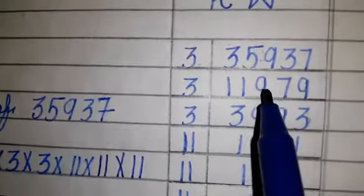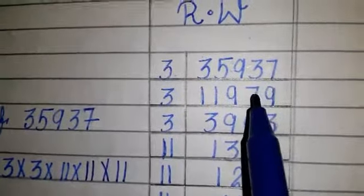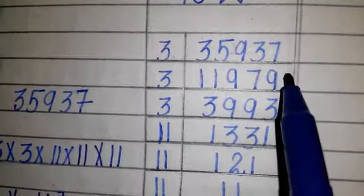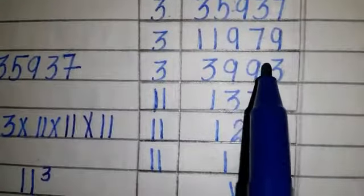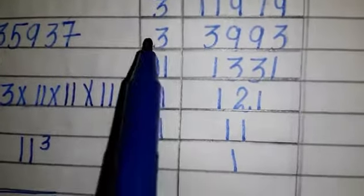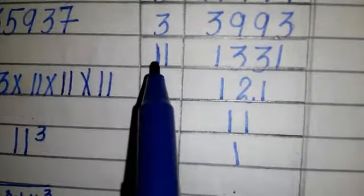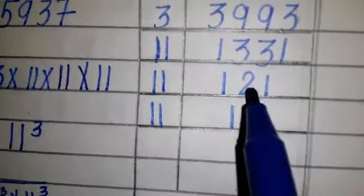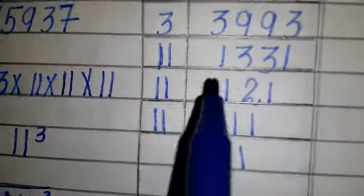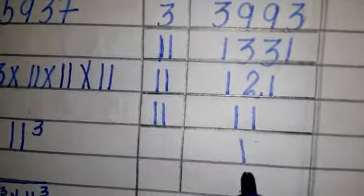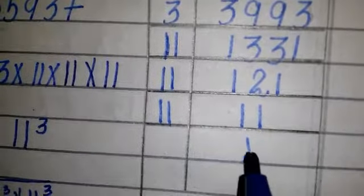We divide 35937 by 3 repeatedly, then by 11 repeatedly. The prime factorization gives us 3, 3, 3, 11, 11, 11. So 35937 equals 3 into 3 into 3 into 11 into 11 into 11.